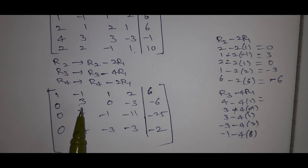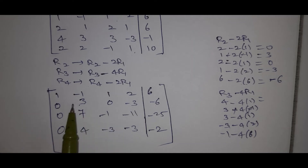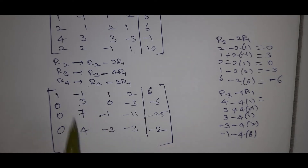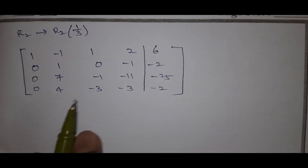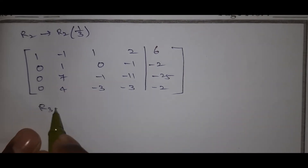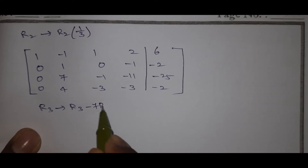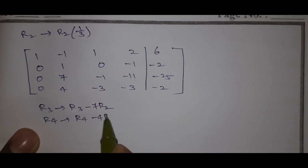The updated matrix after first elimination: Row 1: 1, -1, 1, 2 | 6; Row 2: 0, 1, 0, -1 | -2; Row 3: 0, 7, -1, -4 | -25; Row 4: 0, 4, -3, -3 | -2. Now apply R3 → R3 - 7R2 and R4 → R4 - 4R2.